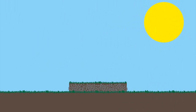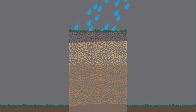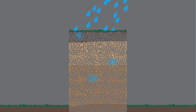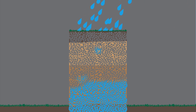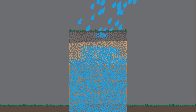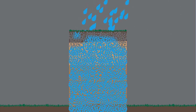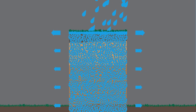Rainfall doesn't equal runoff. One of the other challenges we see right now in drought conditions is that the soil is so dry, the rain that we get hits the ground and goes into the ground because it's very, very dry. We need the ground really to be saturated so then the rain, when it falls, turns into runoff.